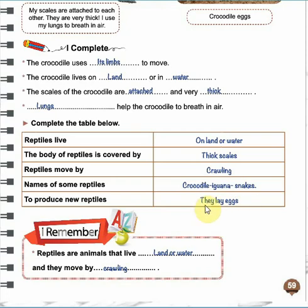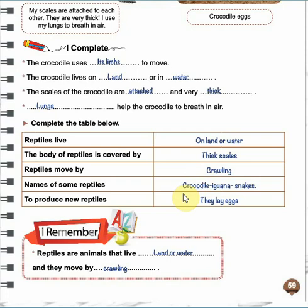How do they produce new reptiles? By laying eggs. I want you to memorize these characteristics. Reptiles live on land or water. The body of reptiles is covered with thick scales. Reptiles move by crawling. And you have to memorize three names of reptiles. They produce new reptiles by laying eggs.